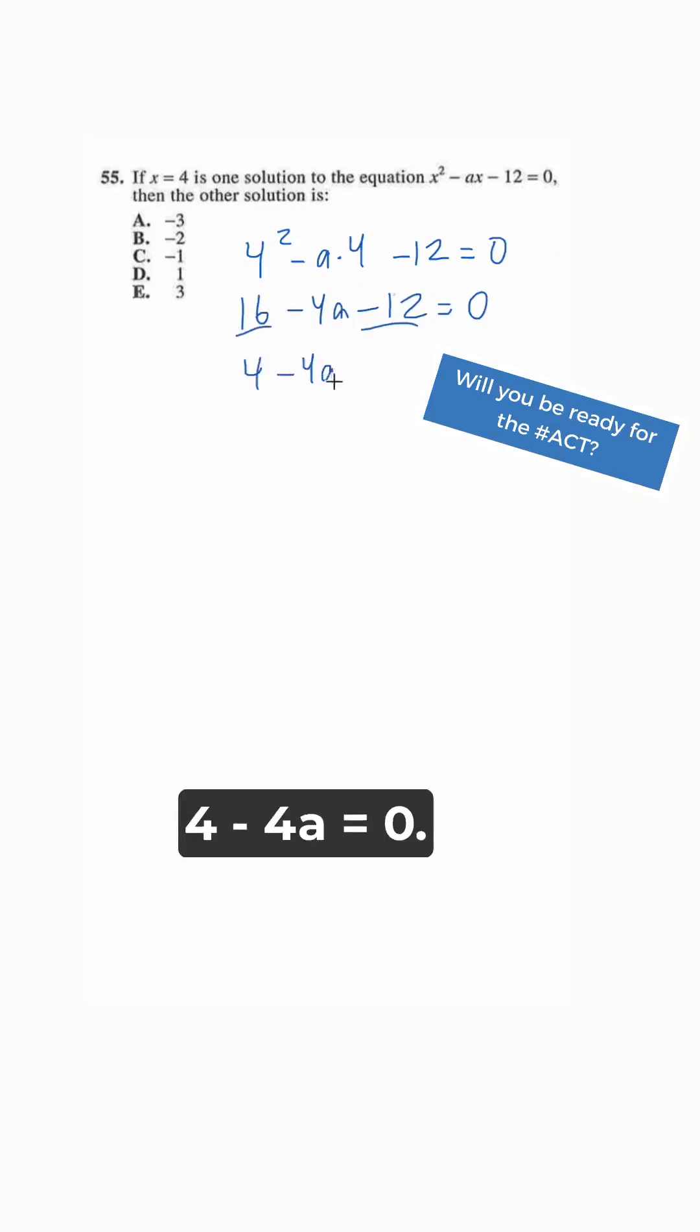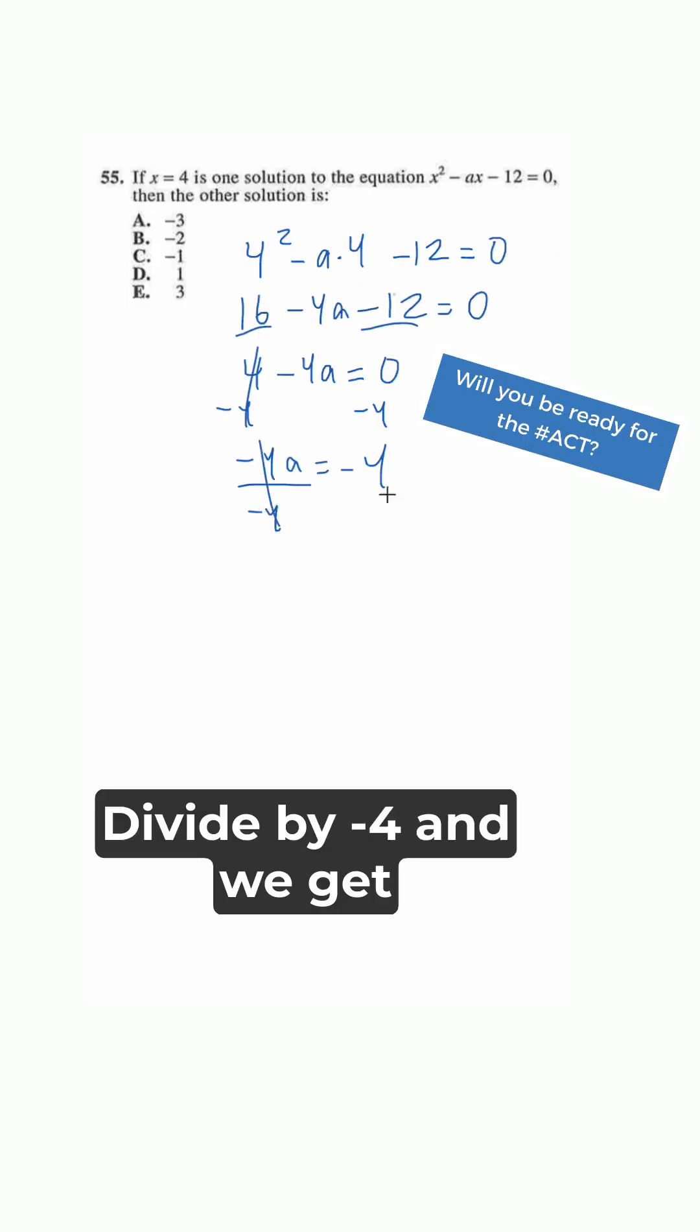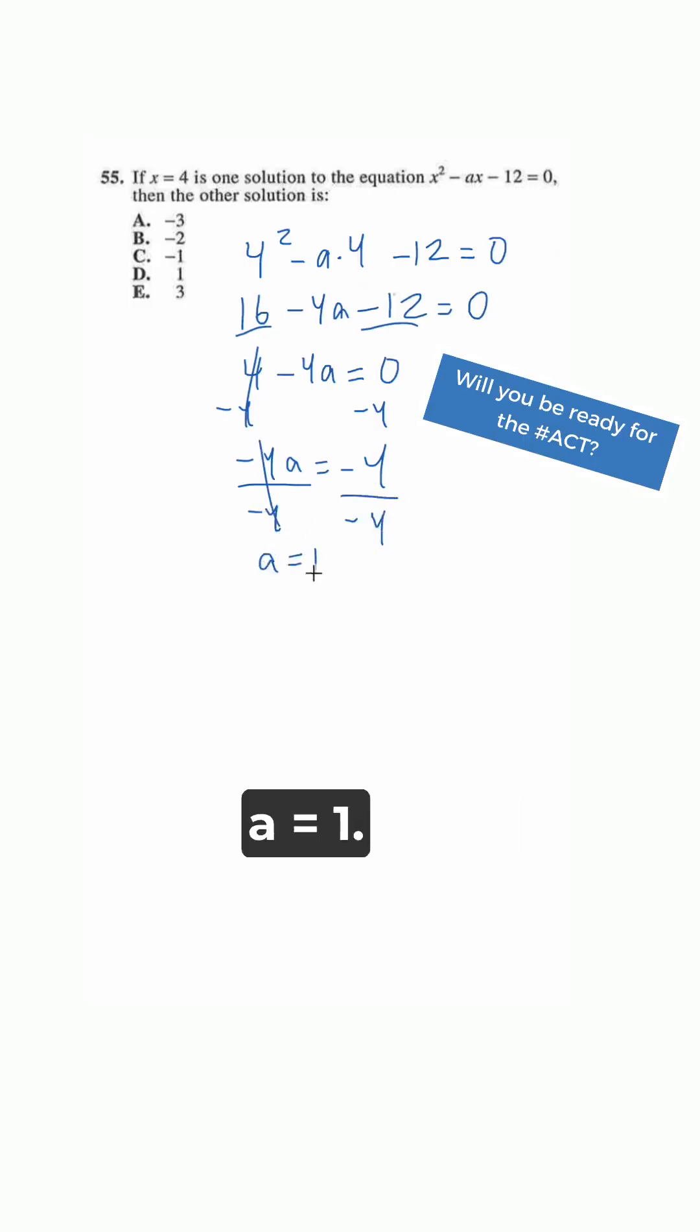4 minus 4a equals 0. This gives us negative 4a equals negative 4. Divide by negative 4 and we get a is equal to 1.